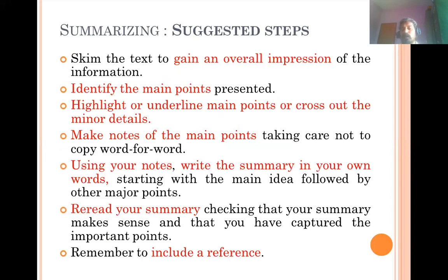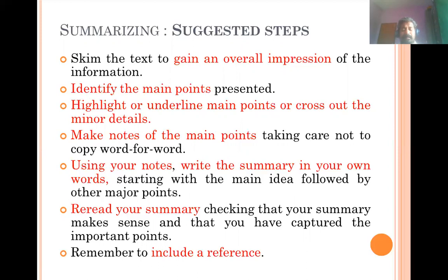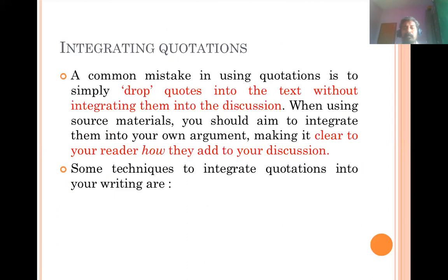When you want to summarize, first read the entire article you want to summarize. Identify all the main points — underline or highlight them — and make notes of all important points. Then present those notes in your own style of writing, read it again and again to make it better, and include the reference.